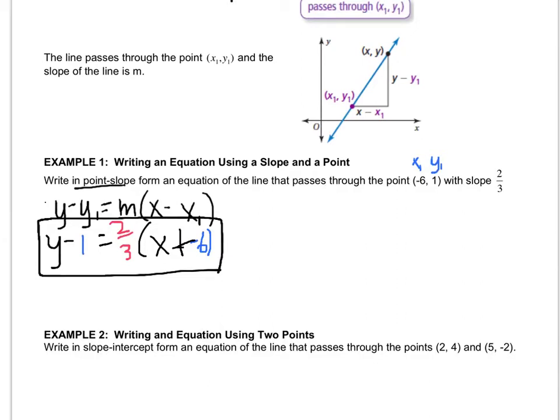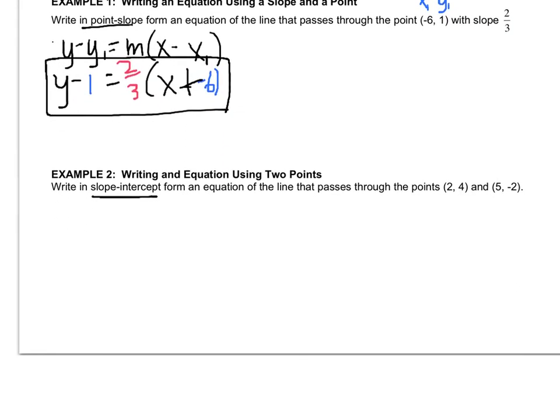In the next question, we're going to take that form and then figure out how to turn it into slope-intercept form, but that's as far as example one wanted us to go. In example two, we still need the slope and the point. So let's figure out the slope.